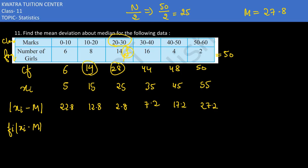Last, we have fi times |xi minus median|. Multiply the frequency with this variable. 6 into 22.8, that is 136.8. 8 into 12.8, which is 102.4. 14 into 2.8, which is 39.2. 16 into 7.2, this would give you 115.2. 4 into 17.2 is 68.8. 2 multiplied with 27.2 is 54.5. We need to take the summation of fi|xi minus M|. Add up here so that you can get the mean deviation about the median.